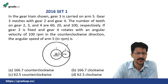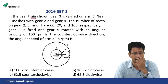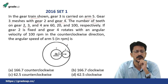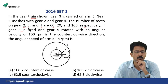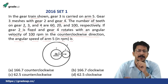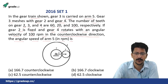2016 Set 1. In a gear train shown, gear 3 is carried on arm 5, gear 3 meshes with gear 2 and gear 4. The number of teeth on gears 2, 3 and 4 are 60, 20 and 100 respectively. If gear 2 is fixed and gear 4 rotates at 100 rpm counterclockwise, the angular speed of arm 5 in rpm is. Just follow the tabular procedure. We define motion, then write arm, gear 2, gear 3 and gear 4, with teeth 60, 20 and 100.